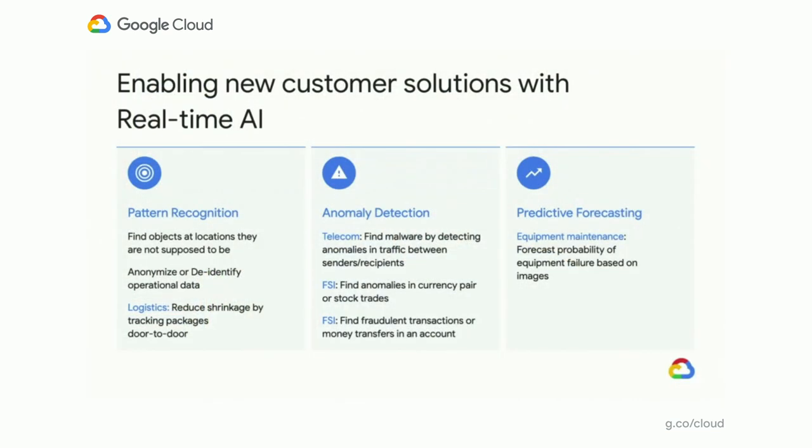In addition to the new components, we're also releasing today five new solutions for anomaly and pattern detection. You can use these solutions as is, customize them, or use them as examples for the components we developed. These solutions allow you to do three types of things: pattern detection, anomaly detection, and predictive forecasting. For pattern detection, you can find objects where they're not supposed to be, anonymize and de-identify operational data, or reduce shrinkage by tracking packages door-to-door. Those are just a few examples.